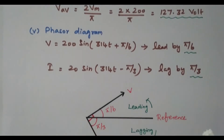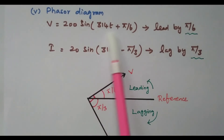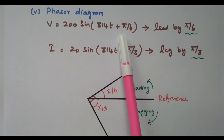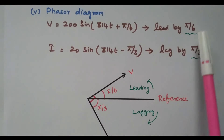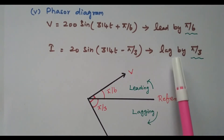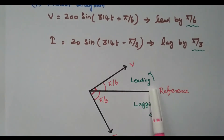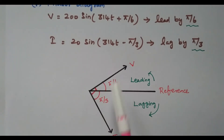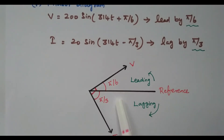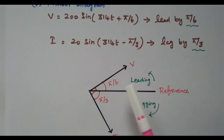For the phasor diagram: from the voltage equation, plus π/6 means voltage leads by π/6 (30 degrees). From the current equation, minus π/3 means current lags by π/3 (60 degrees). The angle between voltage and current is 30 + 60 = 90 degrees. This 90-degree phase difference indicates a purely inductive circuit. From the phasor diagram it is clear that current I lags voltage by 90 degrees.